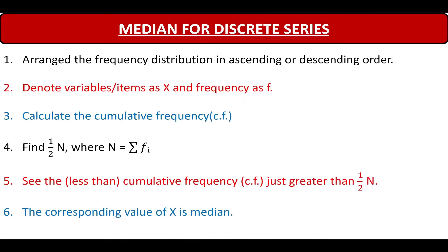Now let us see how to calculate median for discrete series. Step 1: arrange the frequency distribution in ascending or descending order, denoting the variable items as X and frequency as F. Step 2: calculate the cumulative frequency. Step 3: find N/2, where N is the summation of all frequencies. Step 4: see the cumulative frequency just greater than N/2 — the corresponding value of X is the median.